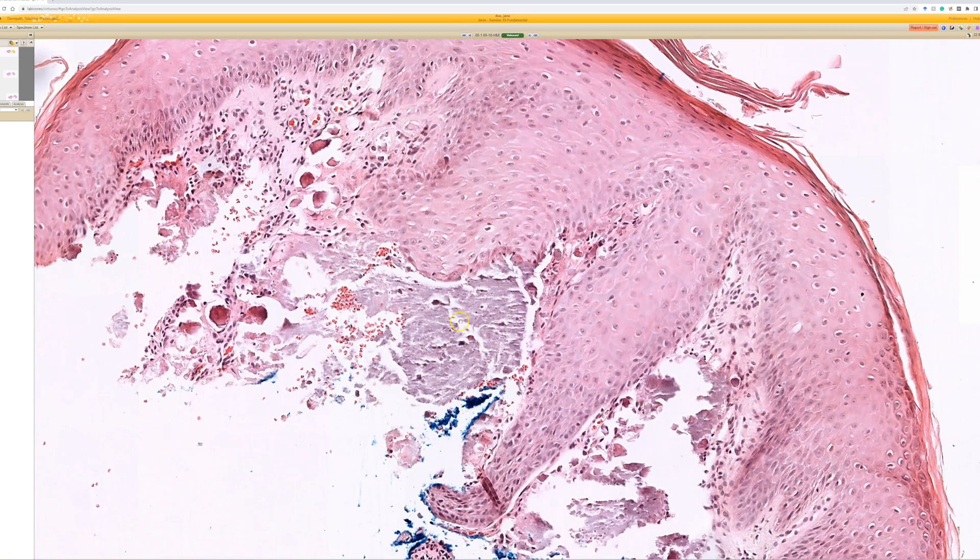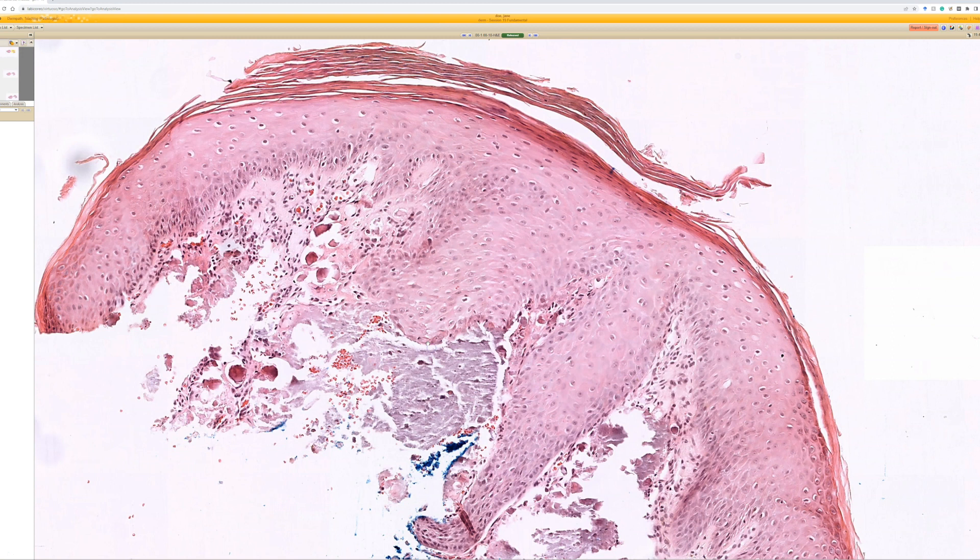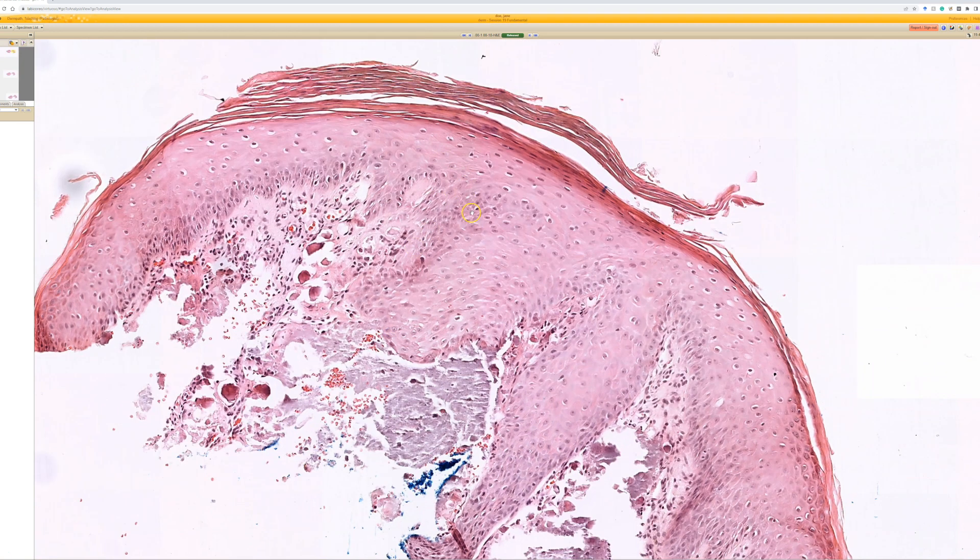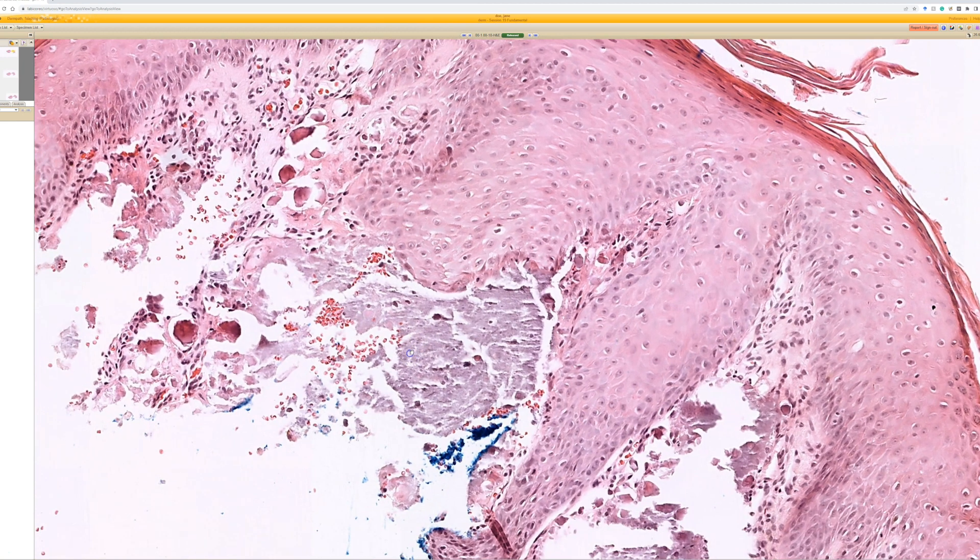No systemic association that I'm aware of. Usually just biopsy because it's bothersome, a little papule on the eye, and they're wondering what it is, and then it's just calcium. So subepidermal calcified nodule, but otherwise microscopically it looks very similar to calcinosis cutis.